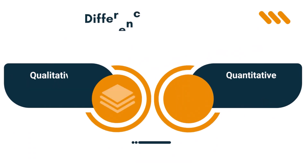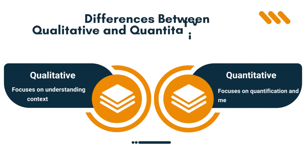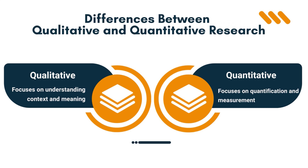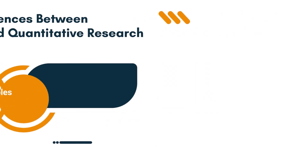Differences between qualitative and quantitative research. One: qualitative research focuses on understanding context and meaning; on the other hand, quantitative research focuses on quantification and measurement. Two: qualitative research typically uses smaller, non-random samples; in contrast, quantitative research typically uses larger, random samples.